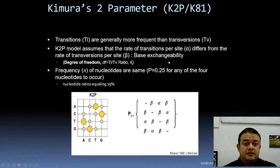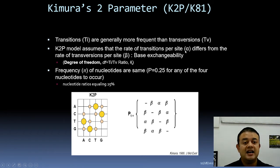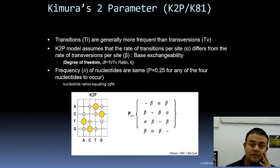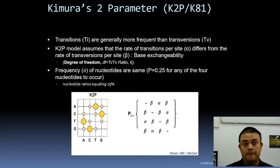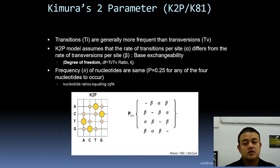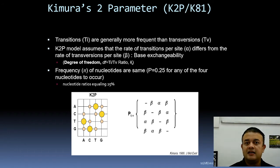The K2P model assumes that the rate of transitions per site, alpha, differs from the rate of transversions per site, beta. Their ratio — the Ti/Tv ratio, also called kappa — remains the same. The degree of freedom is kappa for the K2P model. For base exchangeability, the base frequencies remain fixed at 25% each, just like in JC69.